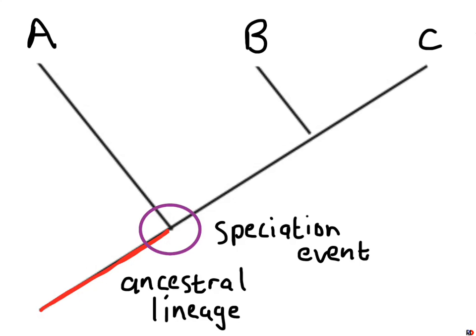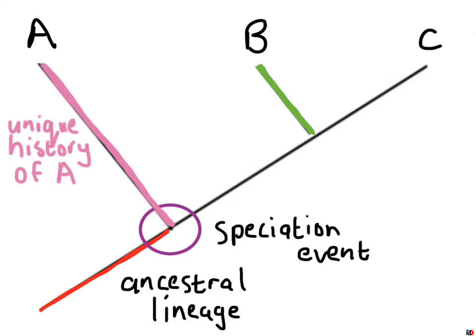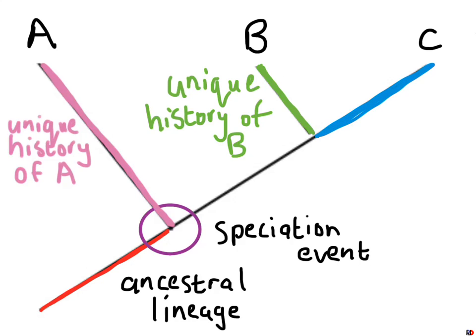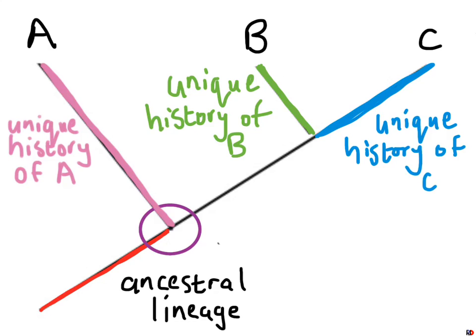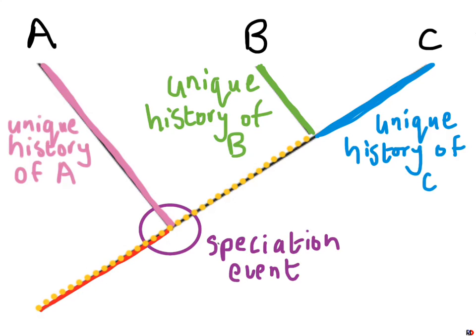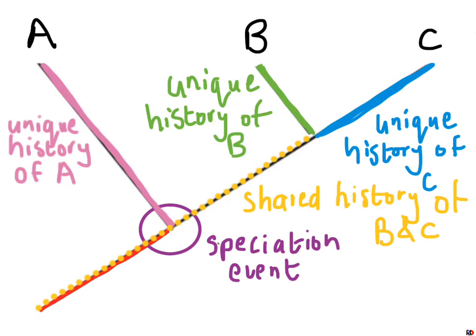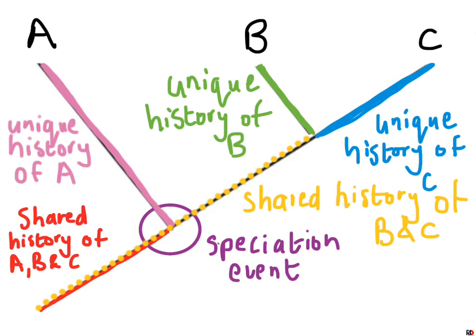If we label the tips A, B, and C: the pink line represents the unique history of taxon A or lineage A; the green line shows the unique history of taxon B; and the blue line shows the unique history of taxon C. The dotted line further down is showing us the shared history of both B and C, and the red line at the bottom is showing the shared history of all three taxa A, B, and C.